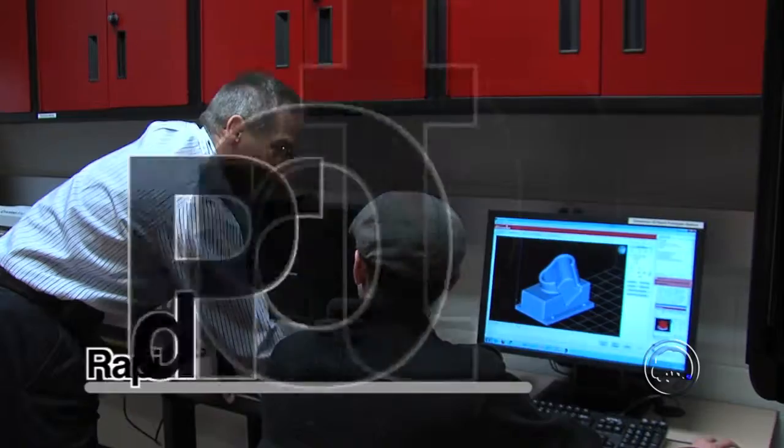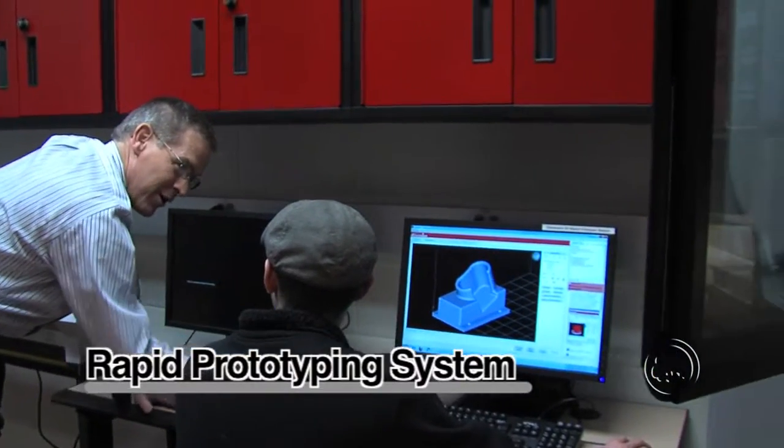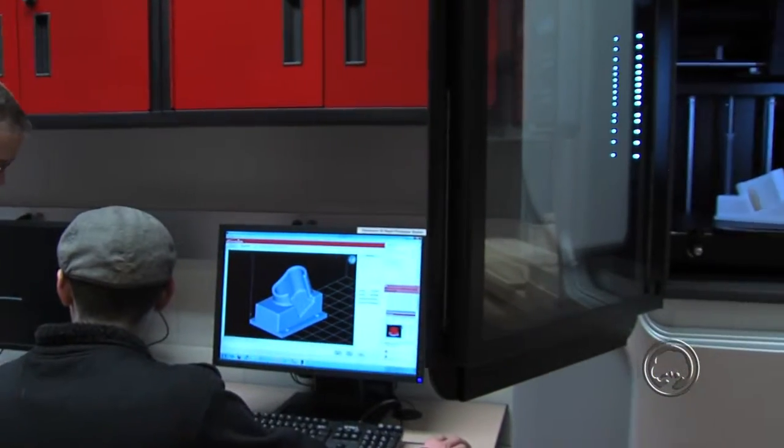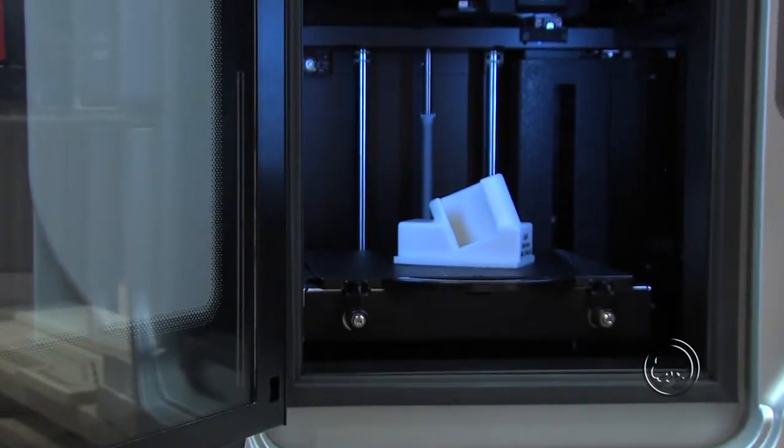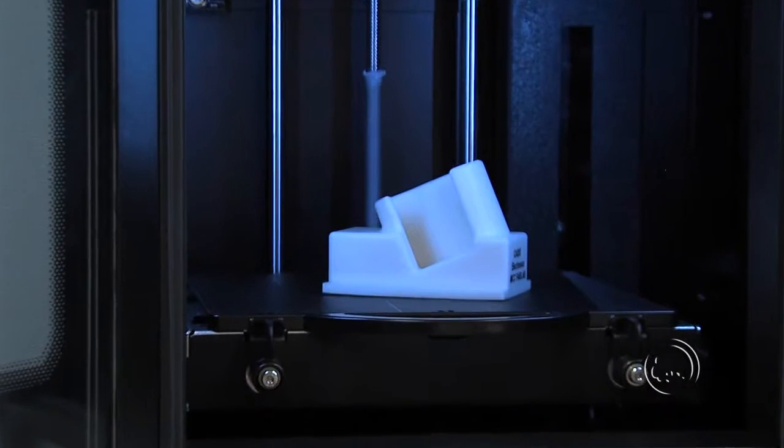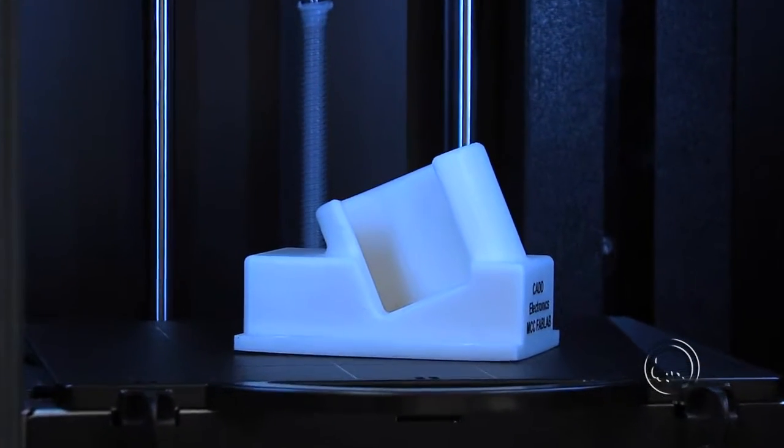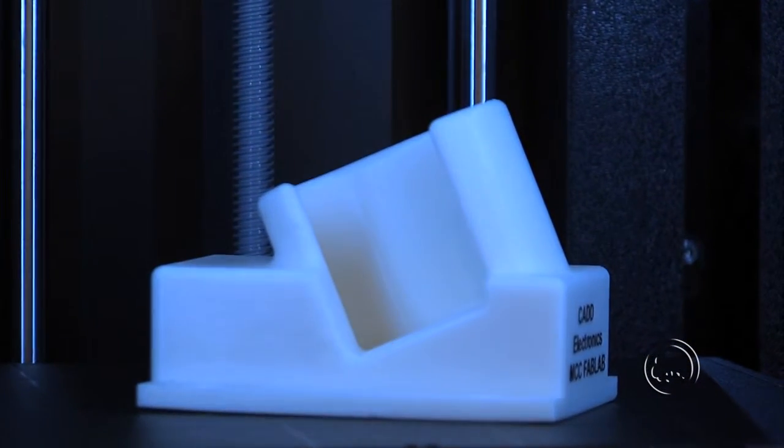We have a rapid prototyping system which takes a three-dimensional computer model and builds a plastic replica of that model. It's what they call an additive manufacturing process, so it slices it in paper-thin layers and then builds each layer one at a time until the finished part is done.